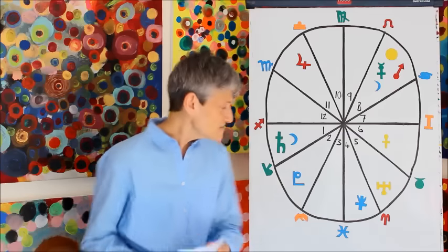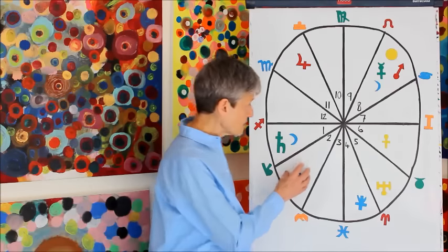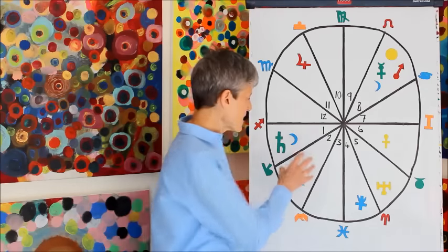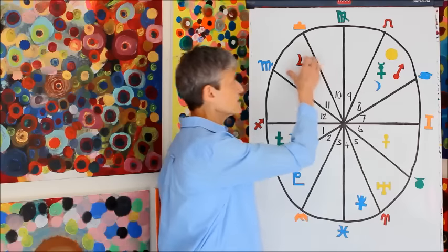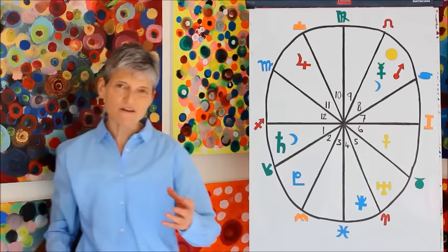What's being activated is the cardinal cross during this time. We've got the cardinal signs, Aries, Libra, Cancer, Capricorn. So that's your second, your eighth house, your fifth, and your eleventh houses being activated here.